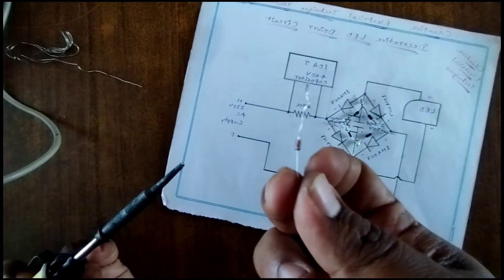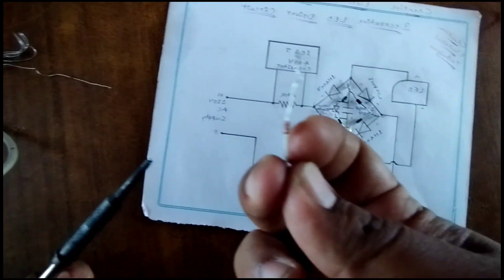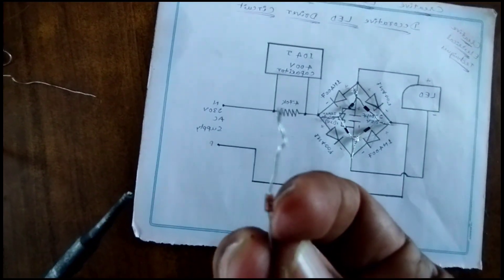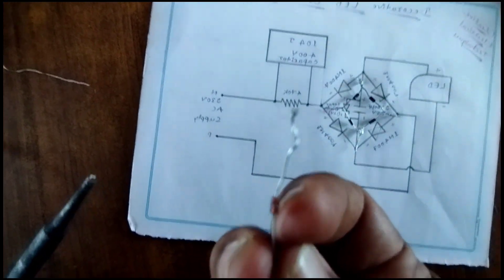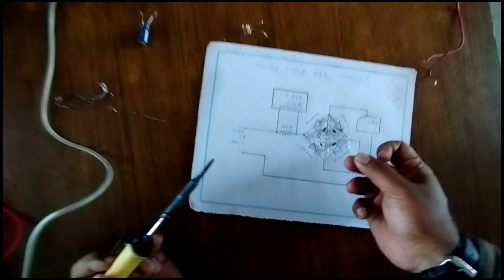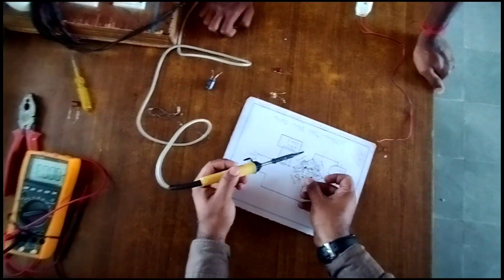The red color portion is anode and black color ring you can see here, it is cathode. Okay, we connect anode to the diode's anode.